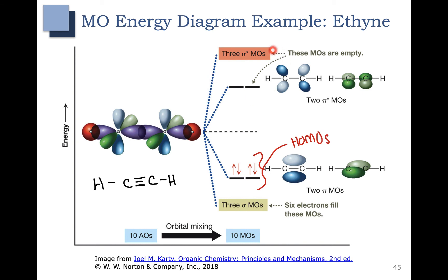All of the antibonding orbitals are unoccupied. The two lowest in energy are the pi antibonding molecular orbitals, so that means we have two LUMOs. This wraps up molecular orbital energy diagrams. You need to make sure that given a molecular orbital energy diagram, you can properly fill them with the correct number of electrons. You also need to make sure that you can identify bonding molecular orbitals, antibonding molecular orbitals, HOMOs, and LUMOs.